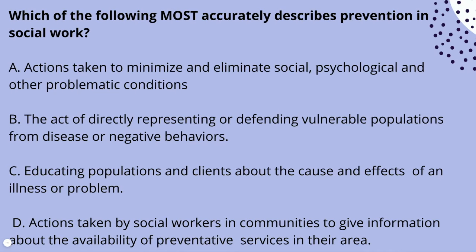We want to figure out what this question is asking — this is a 'most' question, so given the choices, which one is the best and most all-encompassing explanation of prevention work in social work? We can eliminate C — educating populations about the cause and effects of illness is a part of prevention, mostly in primary, but it does not best accurately describe prevention overall. It's not all-encompassing enough. We can also eliminate D — actions taken by social workers to give information about preventative services — also not all-encompassing enough.